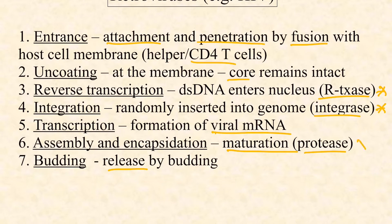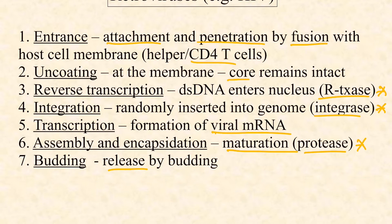There's an important enzyme here called protease. So reverse transcriptase, integrase, and protease are three key enzymes that HIV has to package with it. The host cell has no mechanism for integrating the virus into its own chromosome, nor would it want to. Protease is important because a lot of HIV proteins are produced in long polyproteins, and the protease snips them into their individual subunits so they can fold and assemble. The virus is then released by budding, typical of enveloped viruses.